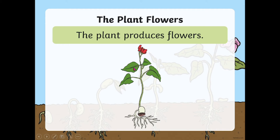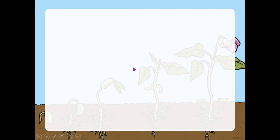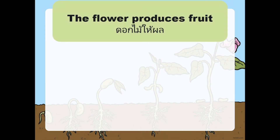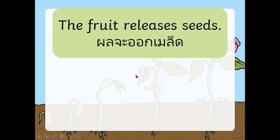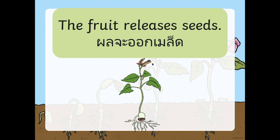The plant produces flowers, and then next the flower produces fruit. Look at this — the flower produces fruit.